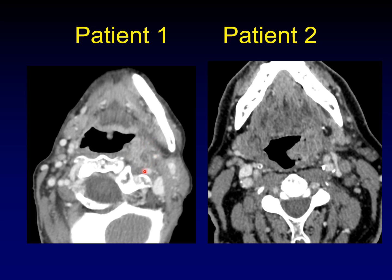Patient one is an infection — this is all just phlegmon expanding the tonsil and infiltrating into the surrounding soft tissue as cellulitis. Whereas patient two had large necrotic lymph nodes, just visible at the top here and better seen on that second image. This patient has a cancer — squamous cell carcinoma with metastatic lymphadenopathy. Note how similar they are if you just look at the tonsils.